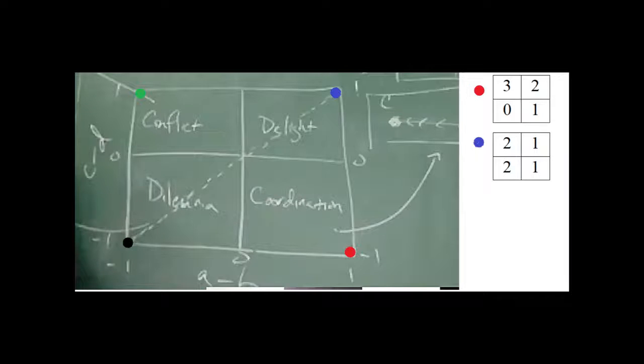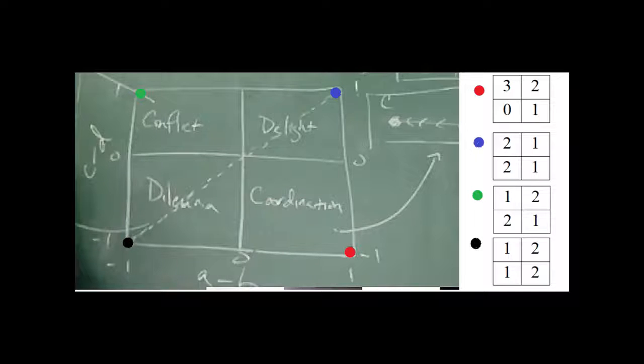When you have A minus B is negative 1 and C minus D is positive 1, this creates a game of conflict because only selfishness can thrive. When you have A minus B is negative 1 and C minus D is negative 1, this is a game of dilemma because there is no situation that can thrive.